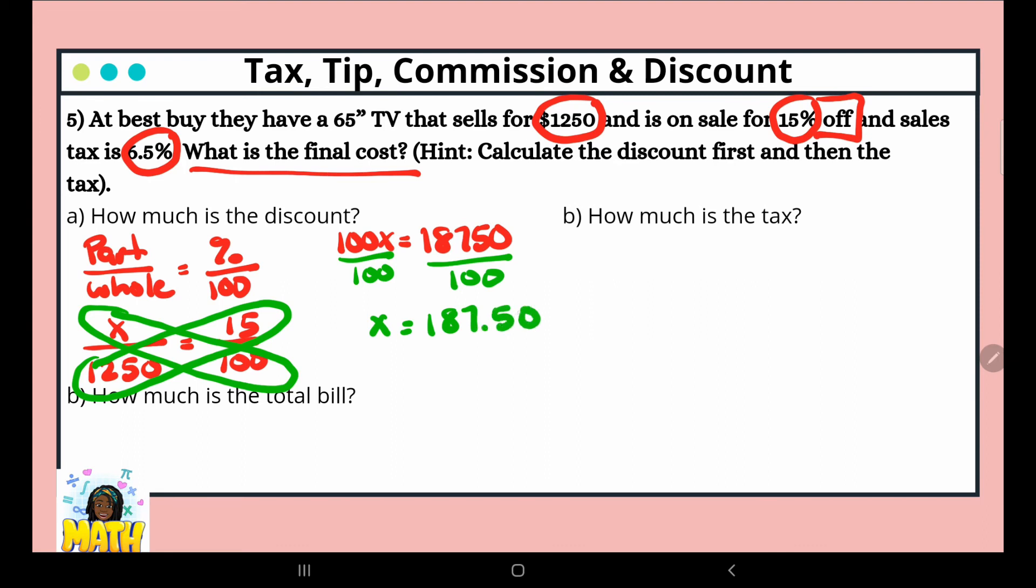And we get that x is $187.50. So the total amount of the discount is $187.50. So now we have to find out what is the price after discount. So we're going to take the total amount, $1,250 minus $187.50, and that equals $1,062.50. So the price after the discount is $1,062.50.